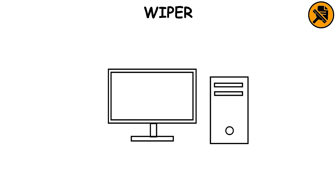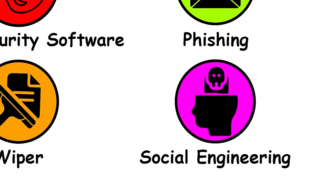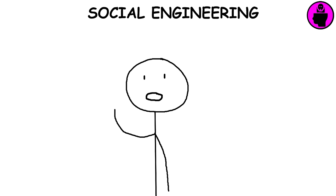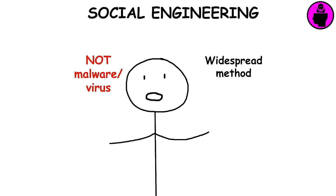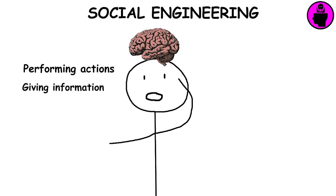Wiper. A wiper is a class of malware intended to erase a computer's memory against the user's will, destroying all useful information in the process. Social engineering. This one isn't a technical malware or virus, but it's a very widespread method to install them or to gain confidential information without installing anything. It's the psychological manipulation of people into performing actions or divulging confidential information. Phishing is an example of social engineering.